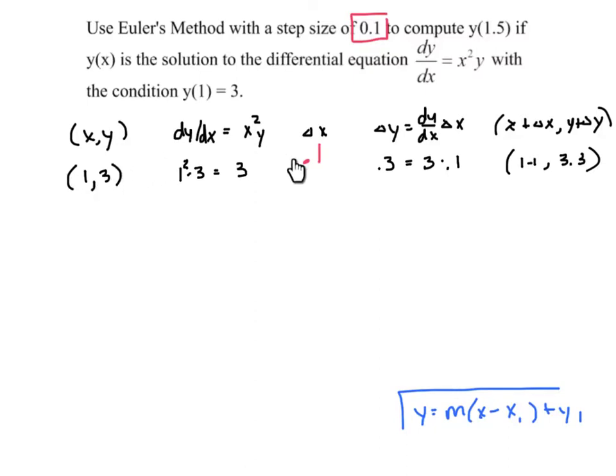Okay. And again, 1 add 0.1 to 1.1. The old point was 3, add 0.3. So there's our new point. Okay. So we've got 1.1 and 3.3. So our dy/dx would be the product of 1.1 squared multiplied by 3.3. And that is 3.993. This is still 0.1. So we multiply. We get 0.3993. And we add 1.2. And 3.3 plus 0.3993 is 3.6993.